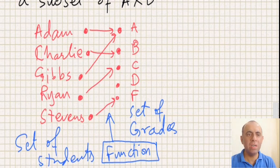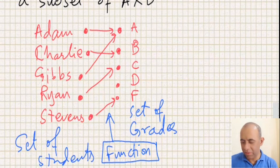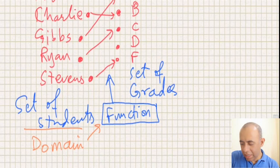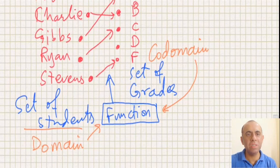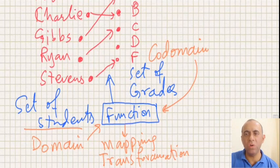If a function f from A to B is defined, we say that A is the domain of f and B is the codomain of f. This function is also known as a mapping or transformation, because it transforms the elements of the initial set to some or all elements of the second set.